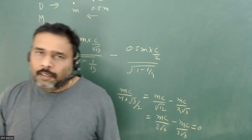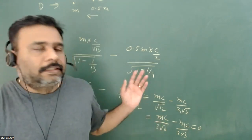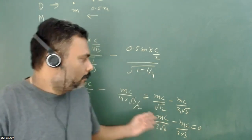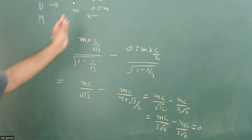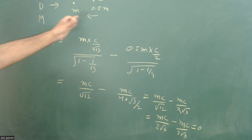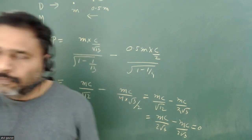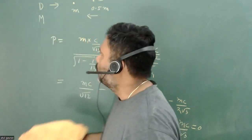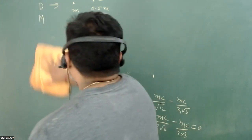So we have seen that the detector is at rest because its momentum is 0. The complete momentum after this particular explosion is also 0, so the detector will remain at rest. Now we proceed to conservation of energy.